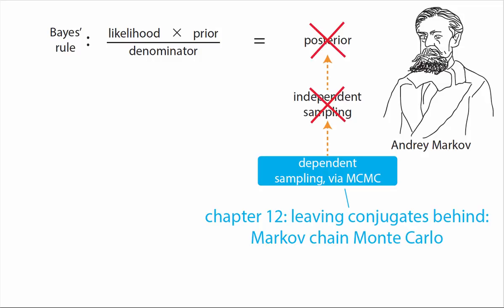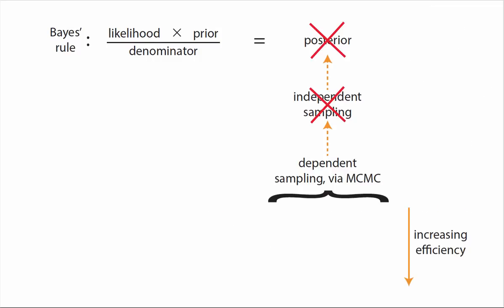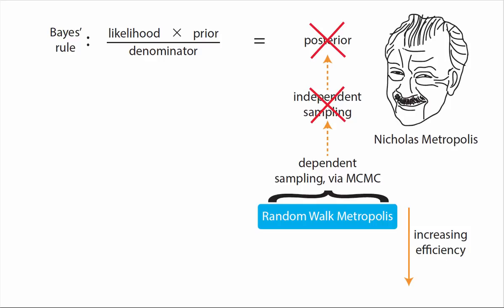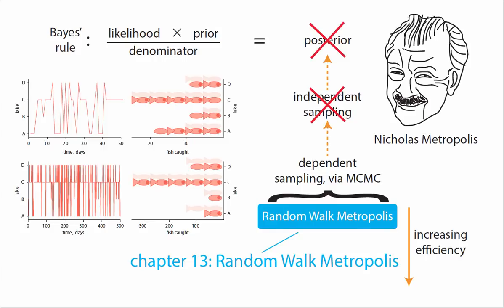In the following three chapters I discuss the predominant methods for doing Markov chain Monte Carlo. Perhaps the simplest method, a method of dependent sampling, is random walk Metropolis, which I discuss in chapter 13.